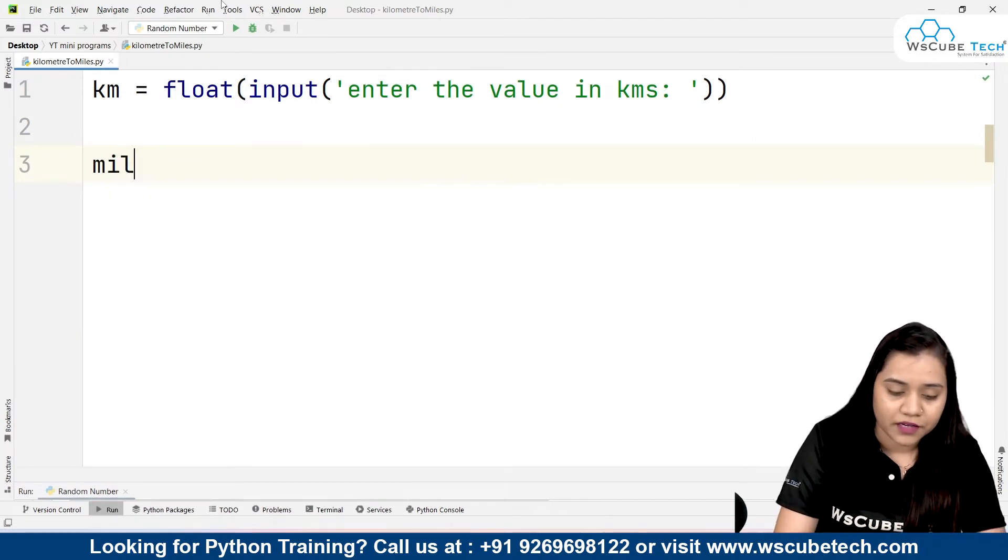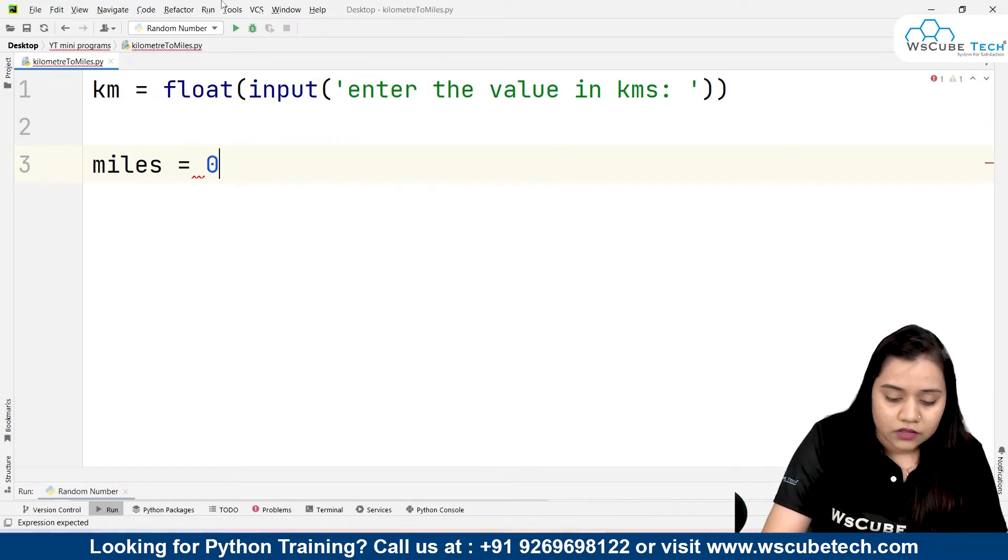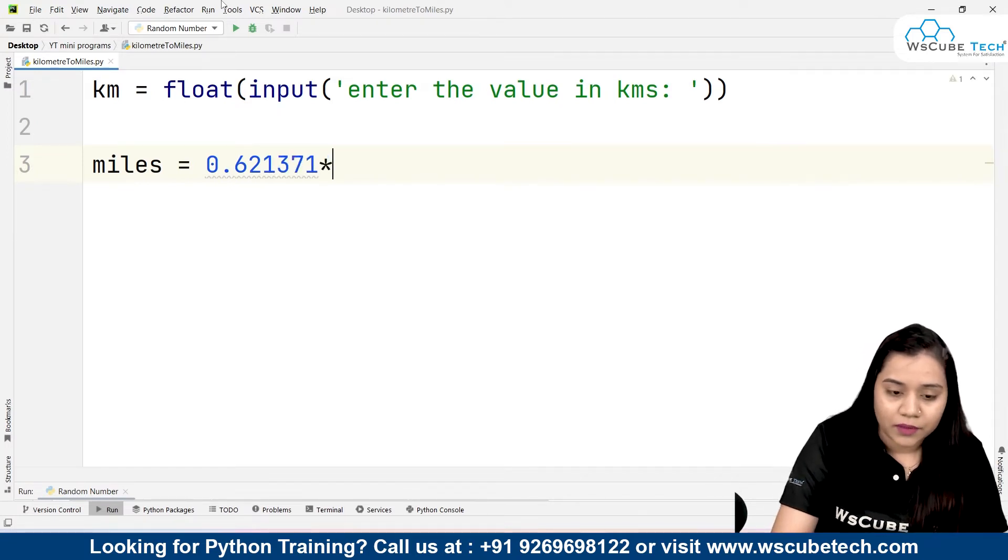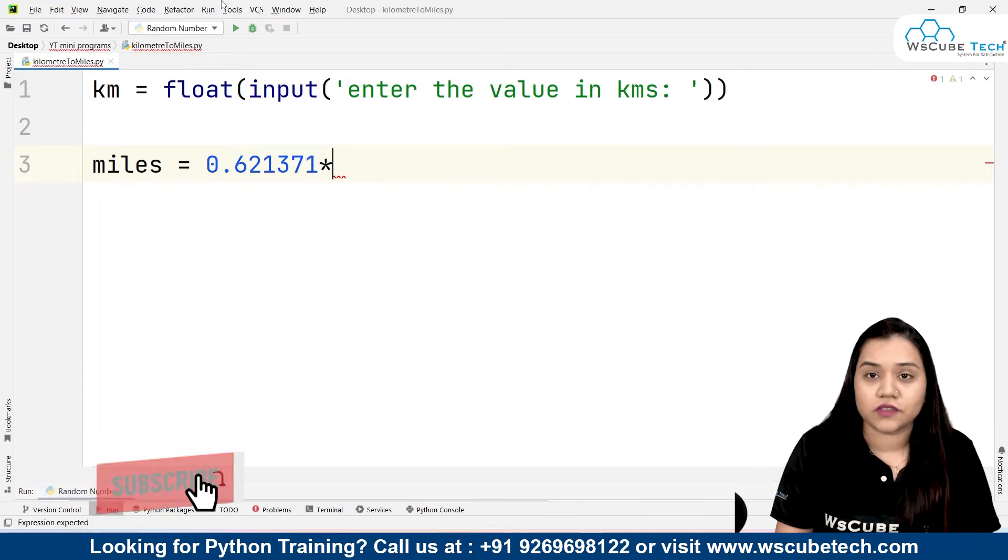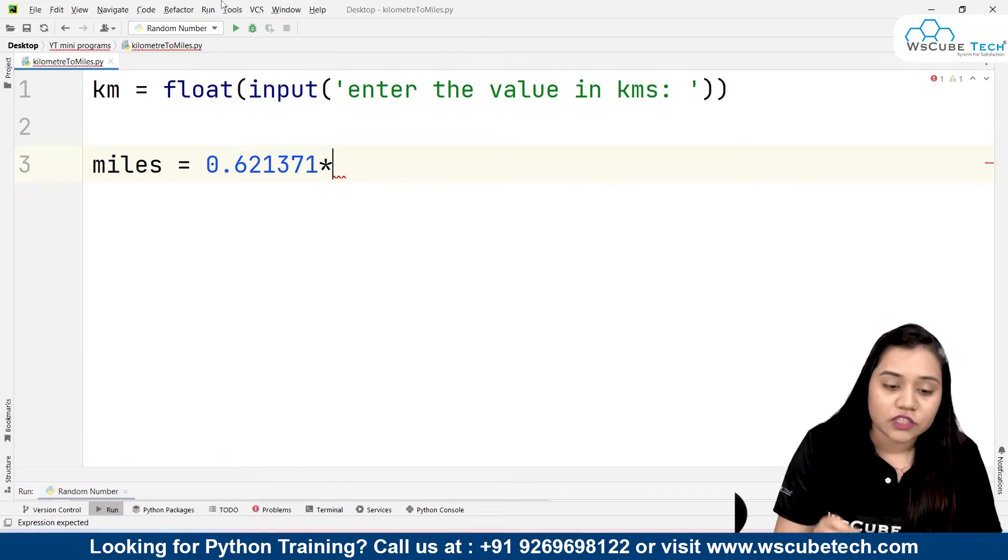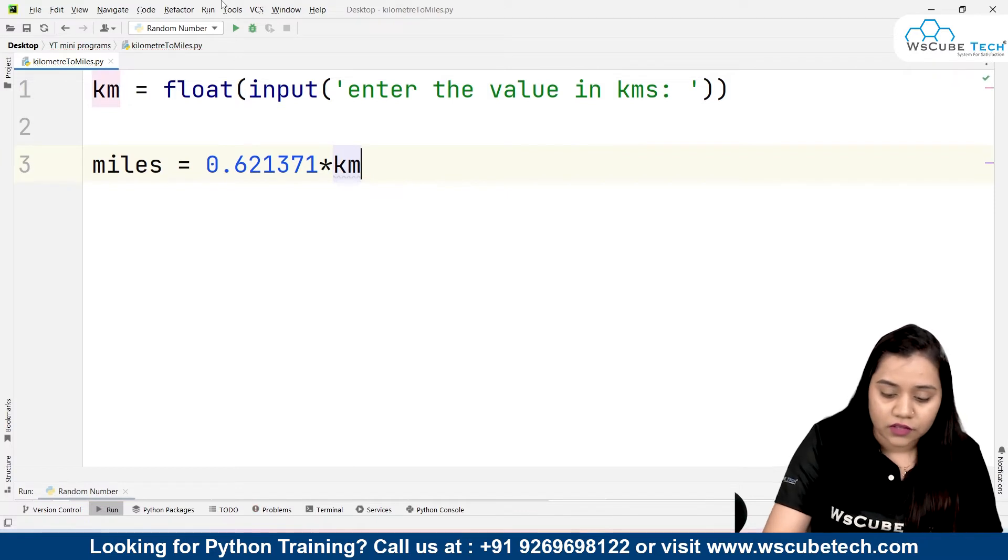After that, we need to convert this kilometer to miles. To convert kilometers to miles, I'll be creating a variable called miles. Miles equals 0.621371 multiplied by—so we will be using our asterisk symbol. The asterisk symbol in Python is used as a multiplication symbol.